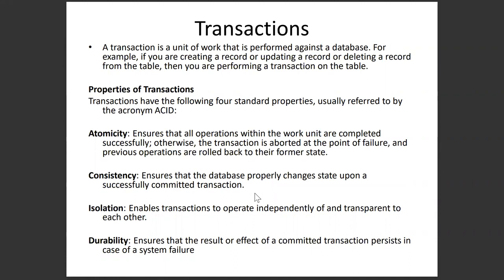The next property is isolation. When two users are trying to operate on the same table simultaneously — say Satish is trying to write the 11th record and Bhargava is also trying to write to that table at the same time — one of their records would be 12th. Isolation ensures that both transactions happen individually and independently of each other. So if Bhargava's transaction fails, Satish's transaction remains unimpacted and can execute successfully without any effect from Bhargava's transaction.